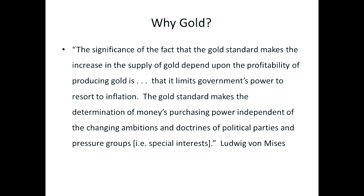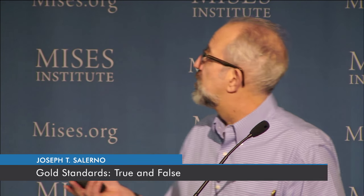Mises says the gold standard makes the determination of money's purchasing power independent of the changing ambitions and doctrines of political parties and pressure groups, which we would call today special interests. Mises continually goes back to this theme throughout his works — that it takes the power of determining the purchasing power of money out of the hands of politicians.